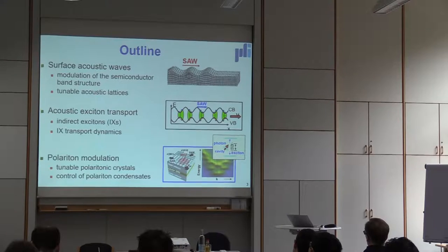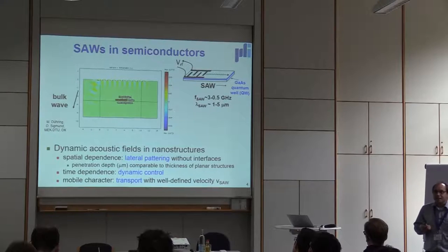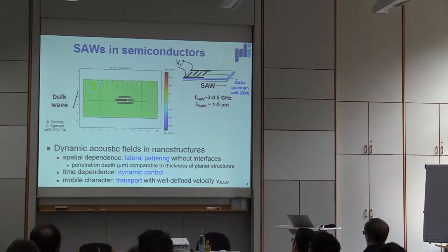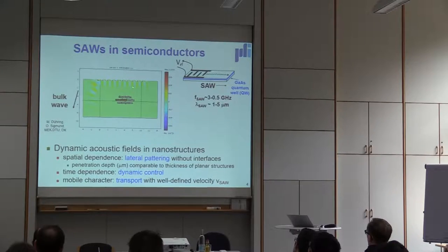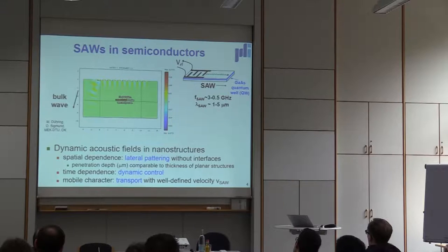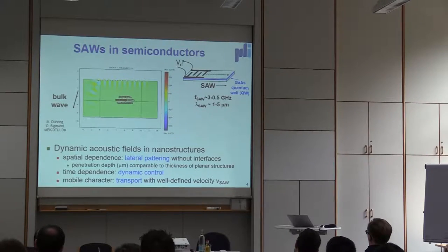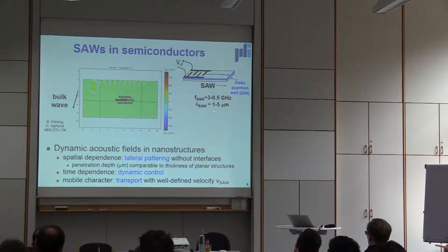Let me start with acoustic waves and give you some motivation for why they are quite interesting. If you hit a piece of material — this is a simulation made by the group of Ole Sigmond at the Technical University of Denmark — you can create bulk vibrations propagating toward the bulk, but it also creates surface vibrations. We don't have to hit the material; we can also use the piezoelectric effect with interdigitated finger structures. If you have a piezoelectric material like gallium arsenide and apply a radiofrequency field, we vibrate the material and end up with a wave propagating to the outside region. These are like mini earthquakes with a wavelength of 1 micrometer — several orders of magnitude smaller than real earthquakes — and frequencies around 1 gigahertz.